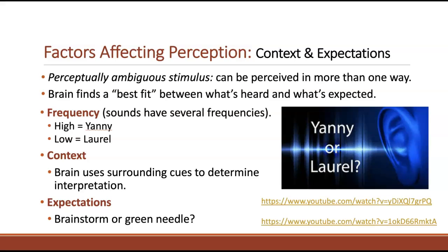Thanks to social media, there are now many examples of illusions that demonstrate how people can be looking at or hearing the same stimulus but perceive it differently. These types of illusions usually occur when the stimulus is perceptually ambiguous — meaning it can be perceived in more than one way. Your brain doesn't have enough information to make an interpretation purely from the stimulus properties itself, so it uses top-down processing to find the best fit between what's heard and what's expected.